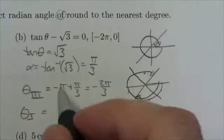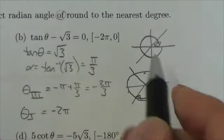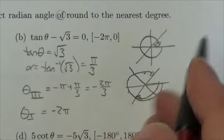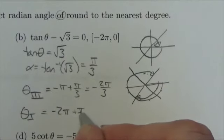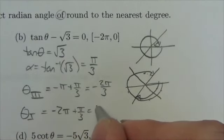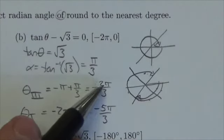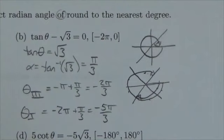Or think of it as going a full -2π rotation, then adding π/3. Either way, I get -5π/3. So my two answers are -2π/3 and -5π/3.